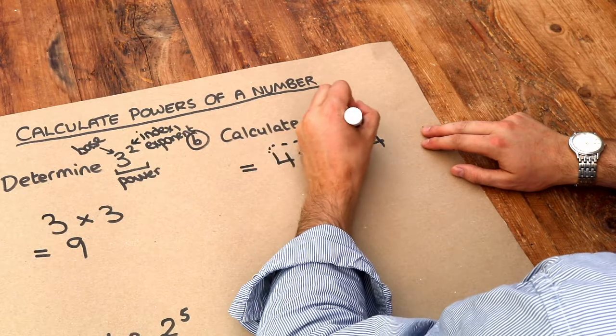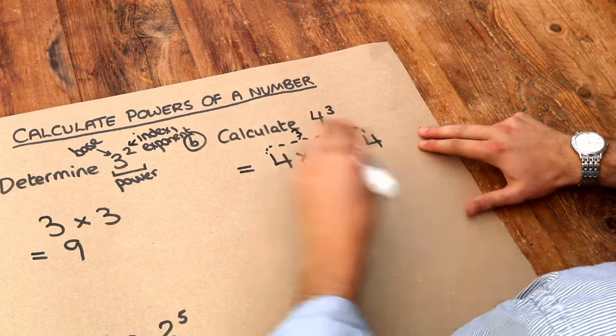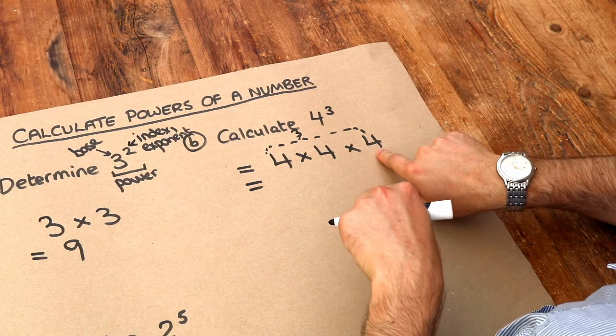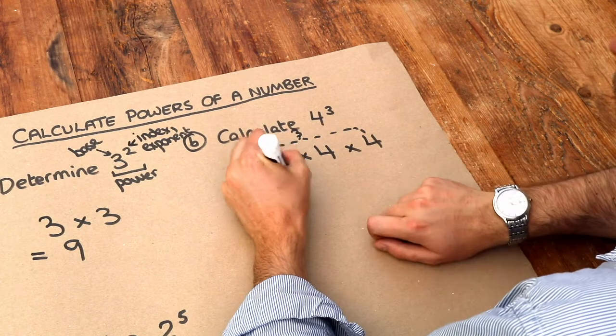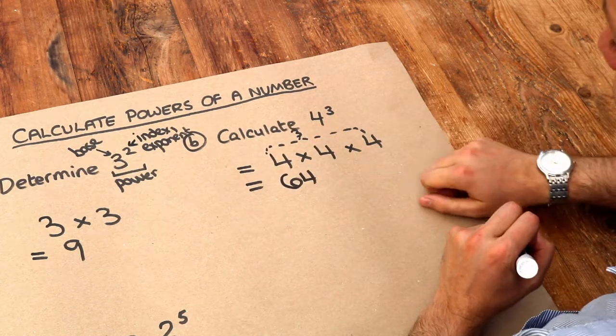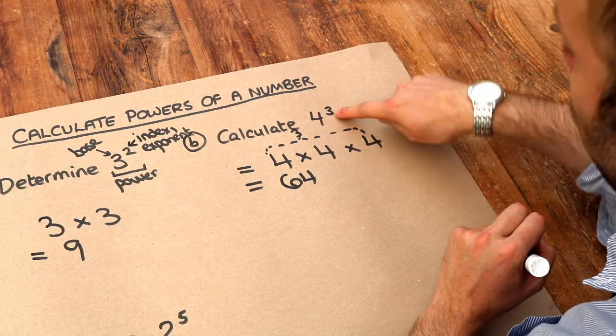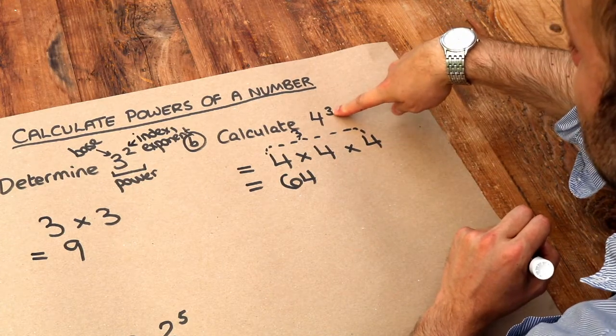So we've got 3 of those. And 4 times 4 is 16. Times 4 again is 64. So 4 to the power of 3 is 64. We could also actually say this as 4 cubed because the index is 3.